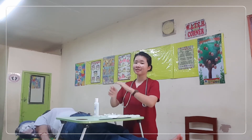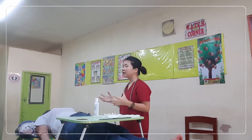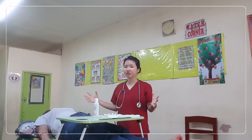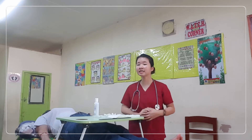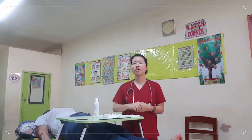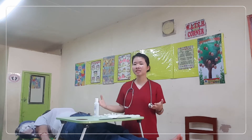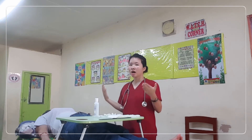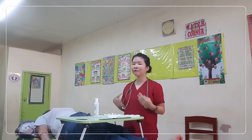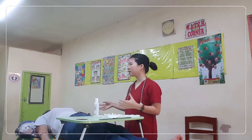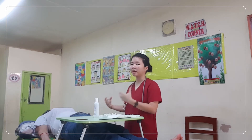Procedure number three: identify the patient to give the proper intervention to the right patient. Procedure number four: close the curtain, if there is any, for the privacy of the patient, and discuss the procedure with the patient to assess how they can help you perform the procedure. This is in order to create a good relationship and a good rapport with your patient.